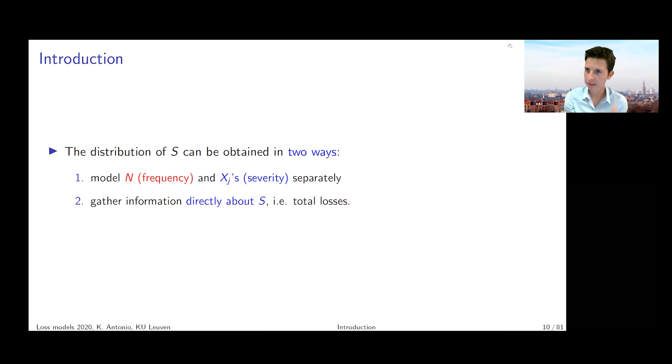I should put it differently. I'm going to collect data on the frequency N, the count random variable on the one hand, and then the Xⱼ's that correspond to it, the severities on the other hand. Or you can directly collect data about S, total losses. My question for you is which of these two strategies would you prefer?